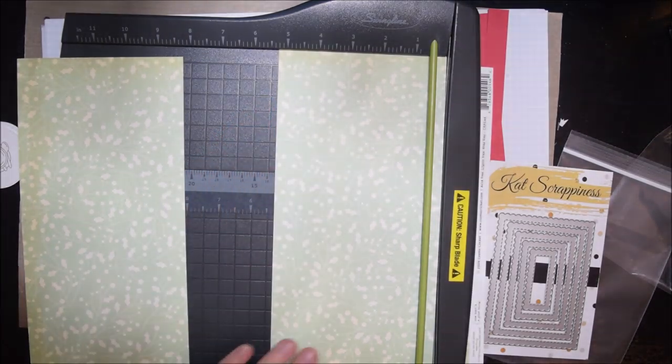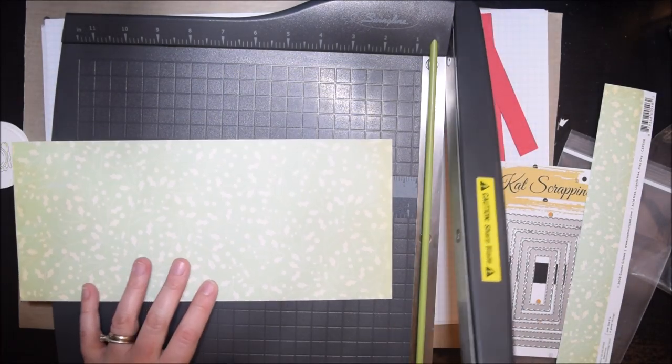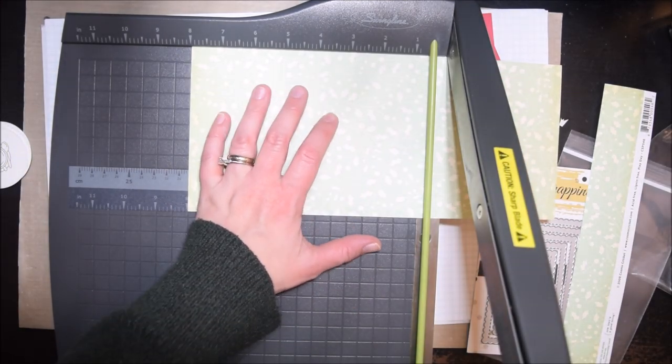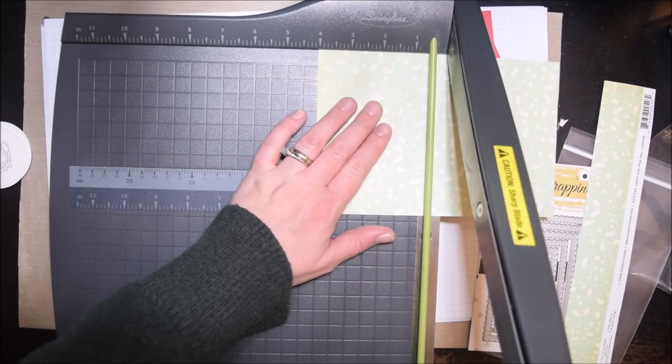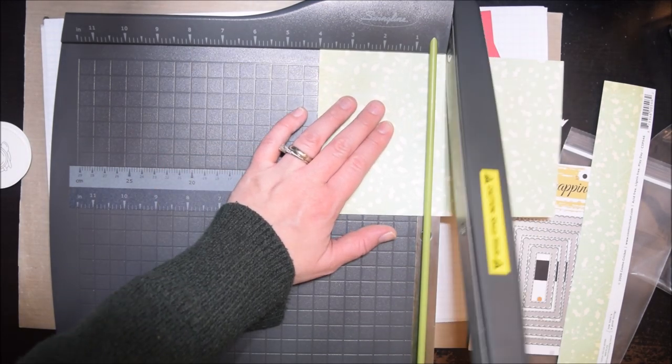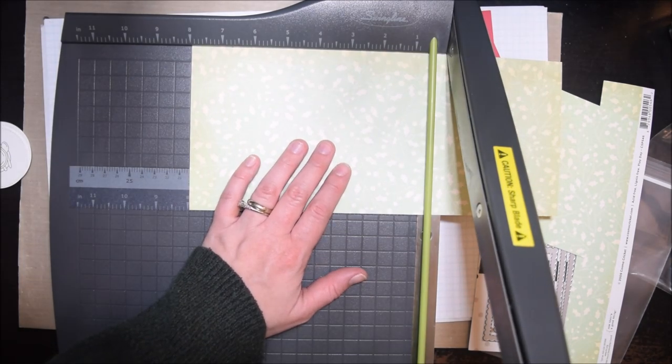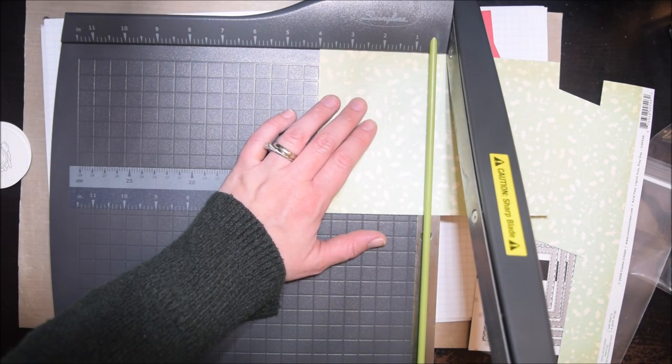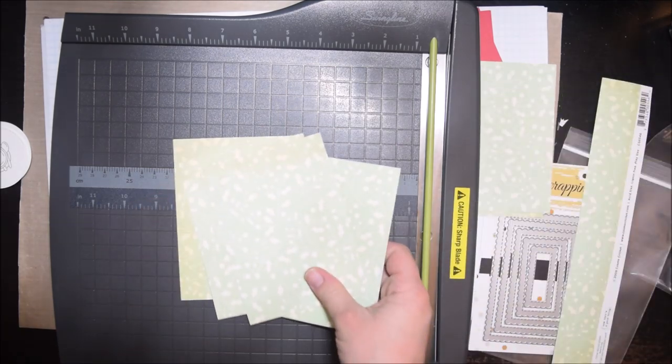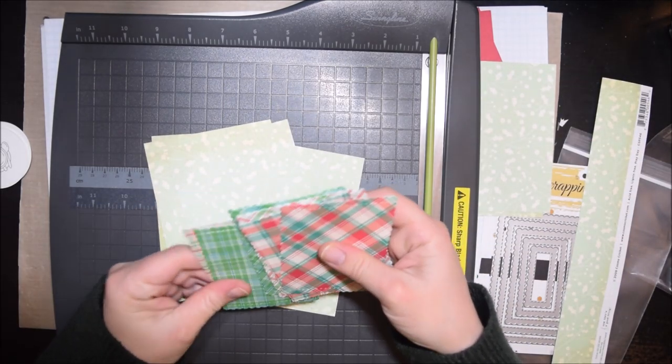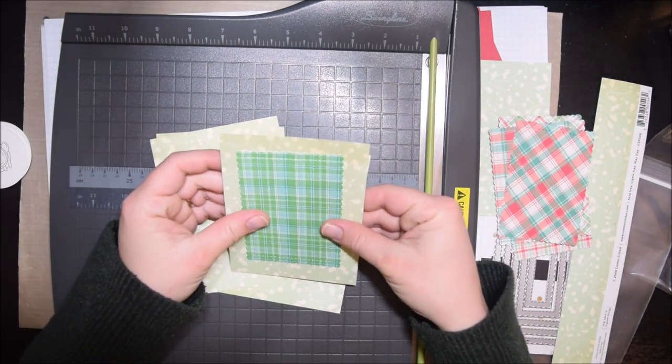This is an old Cosmo Cricket piece of pattern paper that was 12 by 12. I used to do a lot more scrapbooking, so I still have some 12 by 12 papers that I don't use very often. I pulled those out, and one 12 by 12 piece could get six backgrounds.